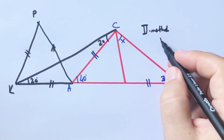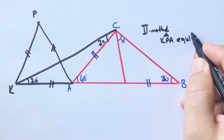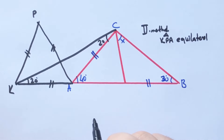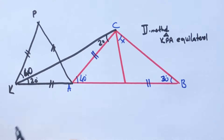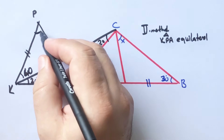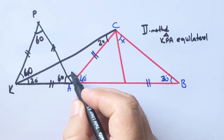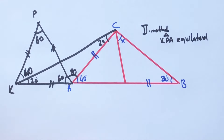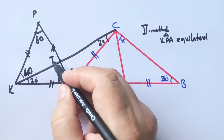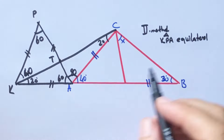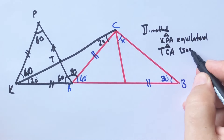Triangle KBA is an equilateral triangle. So this angle must be 40 degrees, here is 60 degrees, and here is also 60 degrees. This angle is 80 degrees.